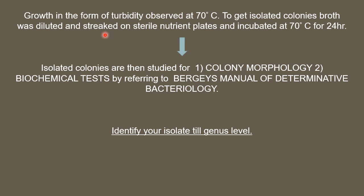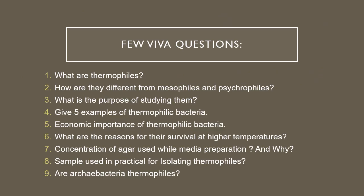Incubate the streaked plates at 70 degrees Celsius for 24 hours. Once isolated colonies are obtained, proceed for colony morphology and perform biochemical tests by referring to Bergey's Manual of Determinative Bacteriology to identify your isolates to genus level.